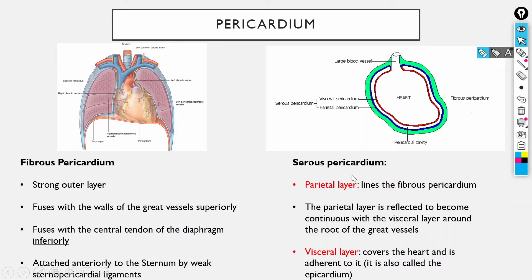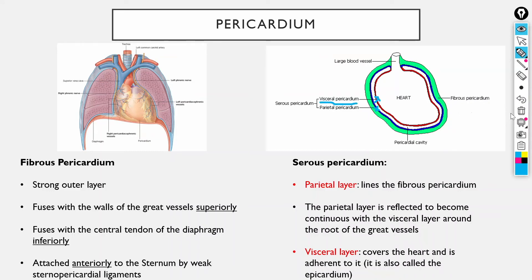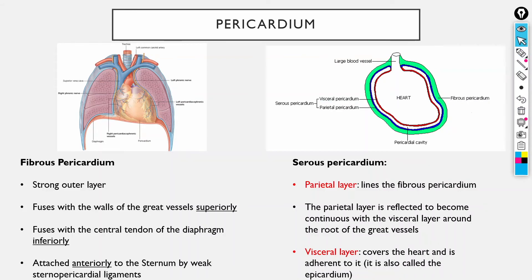The visceral layer is attached to the heart and the parietal layer is stuck to the fibrous layer; between them is the pericardial cavity containing pericardial fluid. If you study the layers of the heart, the outermost layer is called the epicardium, which is the same as the visceral pericardium.